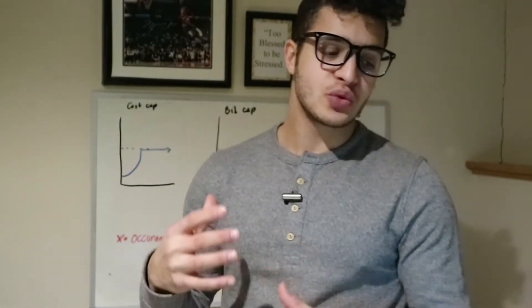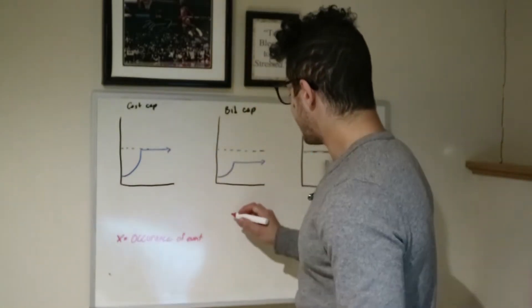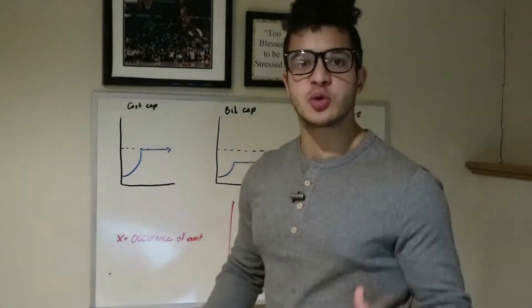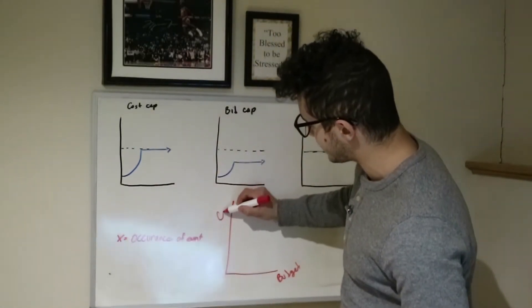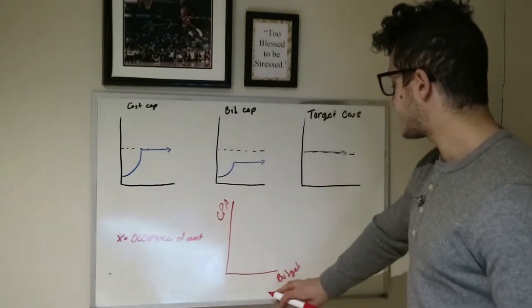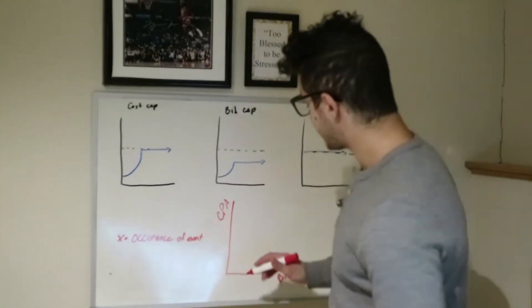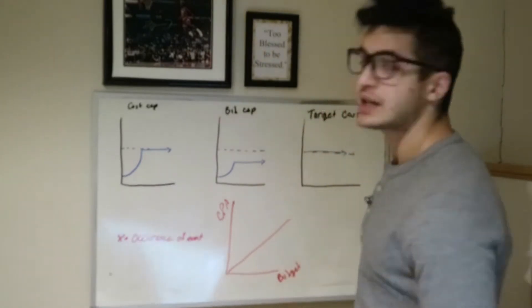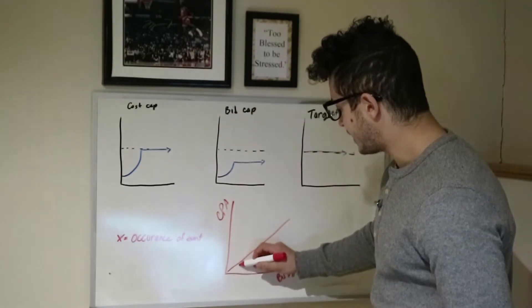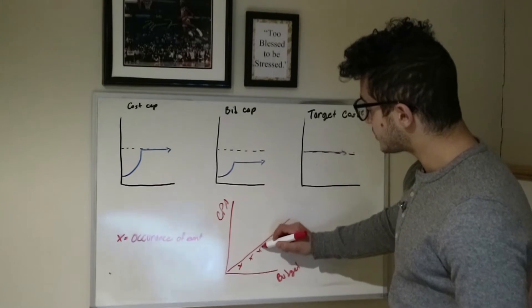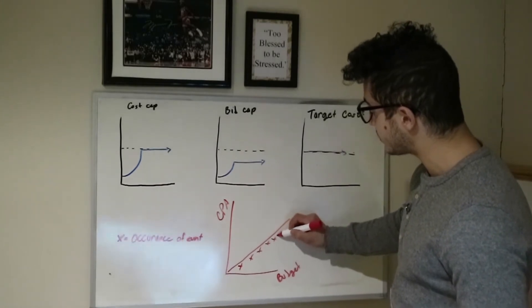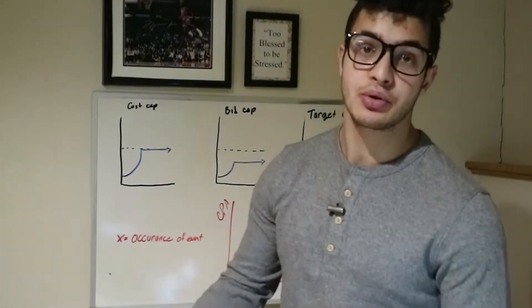Everybody kind of knows what lowest cost is, but here are a couple pieces of information you should know. With lowest cost, the y-axis is the cost per acquisition (CPA) and the x-axis is the budget. You typically see a linear type of graph — it gets the easy stragglers at first, and you start seeing the cost per acquisition slowly rise as time progresses.